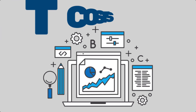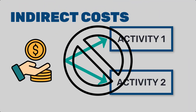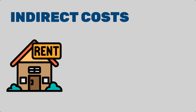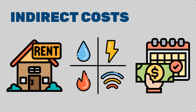Moving on to indirect costs. These costs are not directly tied to a specific work package but are necessary for the project's overall success. Indirect costs can include overhead expenses such as rent, utilities, and administrative salaries. While they may be more challenging to allocate to specific activities, they still impact the project's budget and need to be accounted for.